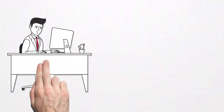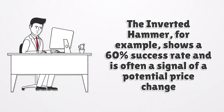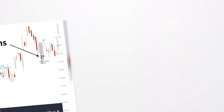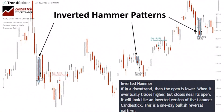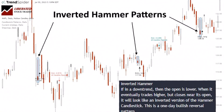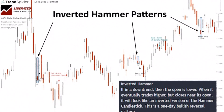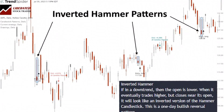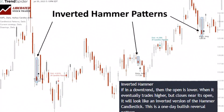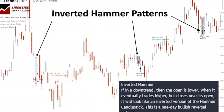The inverted hammer, for example, shows a 60% success rate and is often a signal of a potential price change. It typically manifests at the bottom of a downtrend, hinting at a potential shift in price trajectory. It signals a bullish sentiment, denoting that the market is trying to increase prices, as indicated by the extended upper wick.